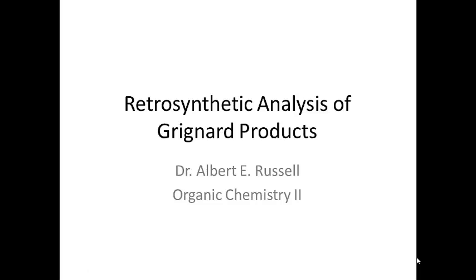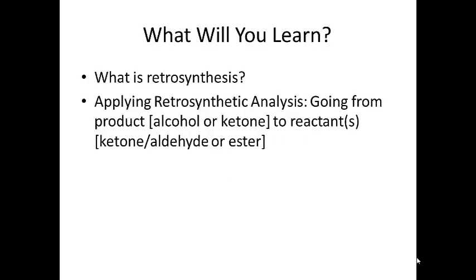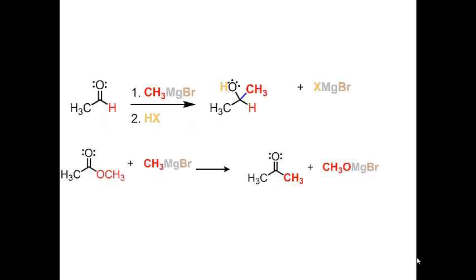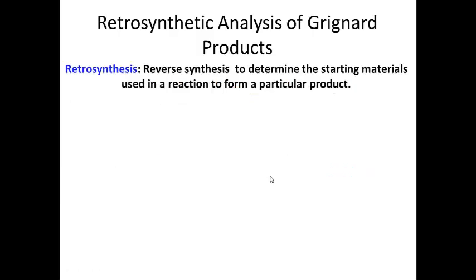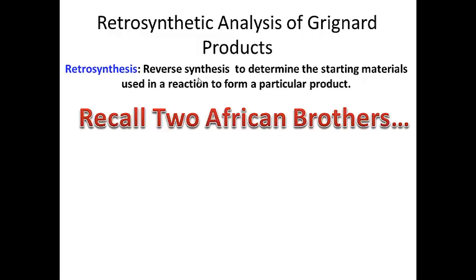Let's talk about retrosynthetic analysis of Grignard products. We're going to learn what retrosynthesis is and how to apply this analysis to Grignard products, so we can go from products back to starting materials. Recall: if you add a Grignard to an aldehyde, you get an alcohol; if you add a Grignard to an ester, you get a ketone as the product.